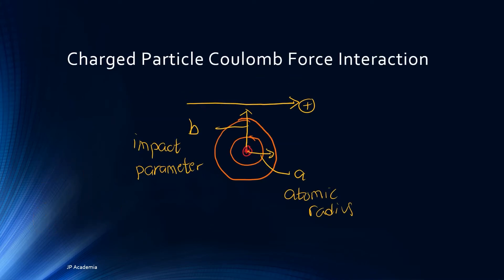When talking about charged particle interaction, it is mostly about Coulomb force interaction. Charged particle Coulomb force interaction can be characterized in terms of two important parameters: first, the classical impact parameter B, and second, the atomic radius A.